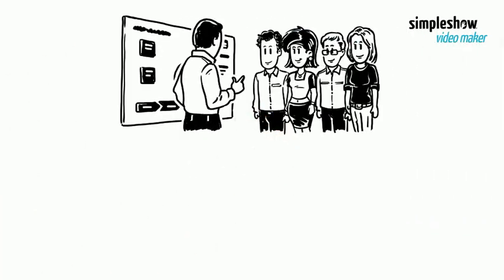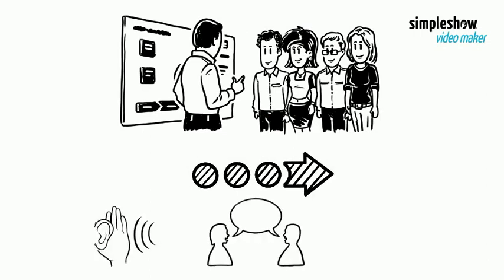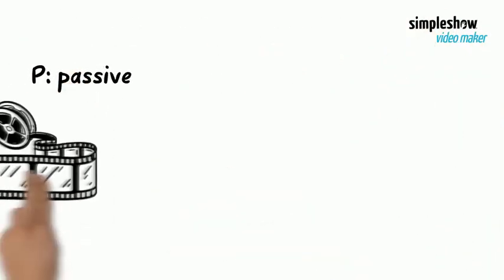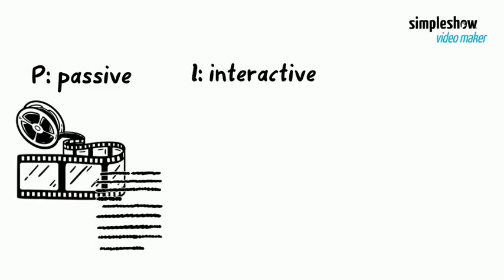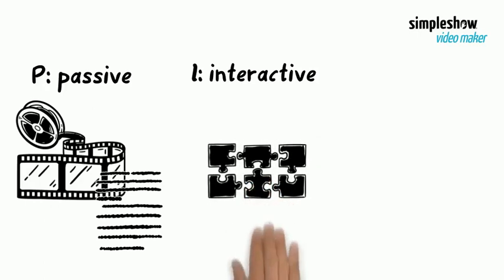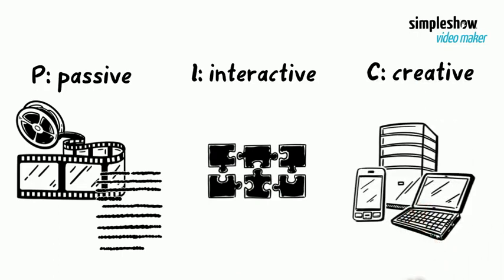PIC describes students' relationship to technology. It comes from being passive to getting interactive, and finally becoming creative. In a first step, students passively watch films or read texts. Secondly, students are interacting with the technology, which means tests, games, collaboration. And finally, students create artifacts and solve problems applying technology.